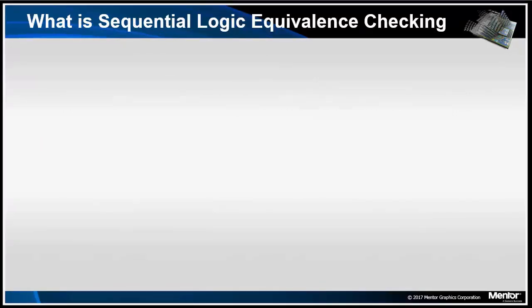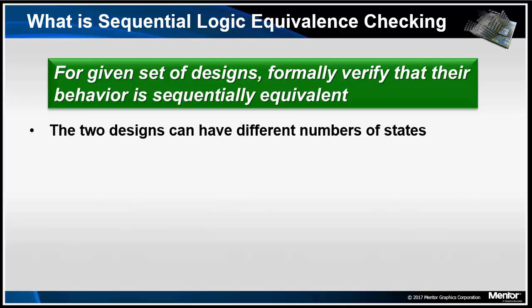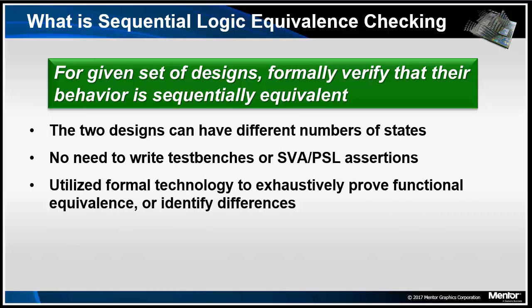What is Sequential Logic Equivalence Checking? The definition is as follows: for a given set of designs, formally verify that their behavior is sequentially equivalent. The two designs can have different numbers of states. Formal technology is different from simulation — when using a formal tool, there is no need to write test benches. When using SLEC, you don't need to write assertions either. It utilizes formal technology that can prove functional equivalence of two designs for all inputs, or identify any differences between the two designs.